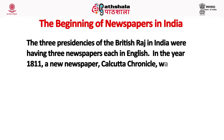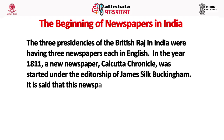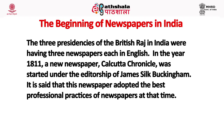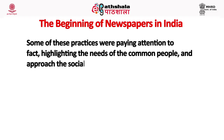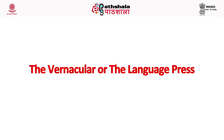In 1811, a new newspaper, the Calcutta Chronicle, was started under the editorship of James Silk Buckingham. This newspaper adopted the best professional practices of the time, including paying attention to facts, highlighting the needs of common people, and approaching social issues objectively.